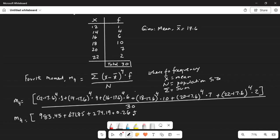Then 20 minus 17.6. Take that difference raise it to the power of 4 and multiply it with the corresponding frequency which is 7 and that is 232.24. And then the last one is 22 minus 17.6. Take that difference exponent it to 4 and then multiply the corresponding frequency which is 2. And the answer is 749.60.